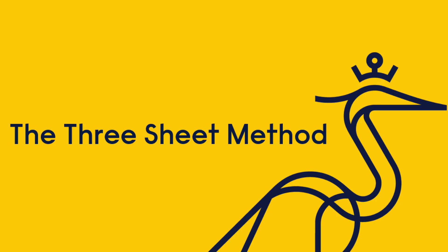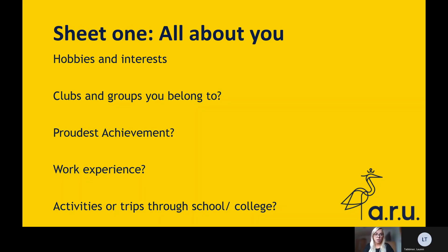Thank you Lauren. For the next few slides I'll be taking you through the three sheet method. This is a method our team has come up with which helps you break down the process of writing a personal statement. By preparing to write this way, you will ensure you include everything you need. The first step is sheet one, which is all about you — have a think about the experiences you have which relate to the course you're applying for. Whether you prefer to visualise things or write lists, take notes or create a mind map however works best for you.